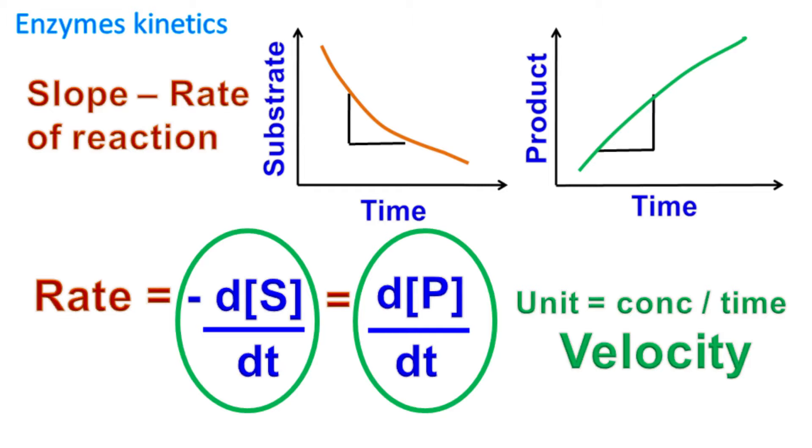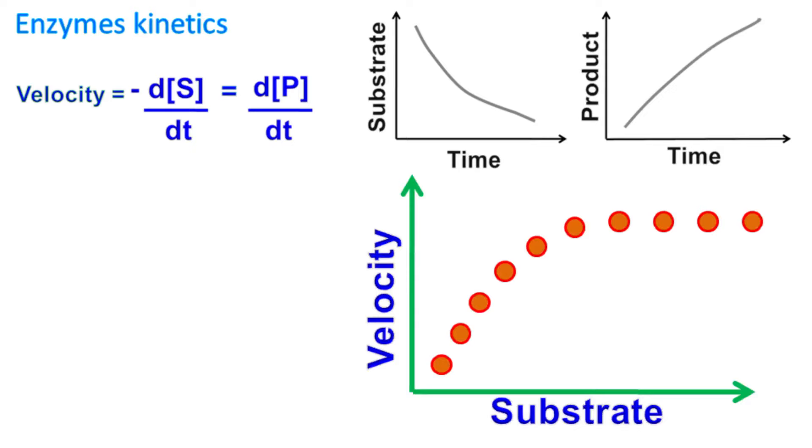We can also call this as velocity of the reaction as the concentration is changing with respect to time. Now it turns out that the velocity of reaction changes when substrate concentration changes.